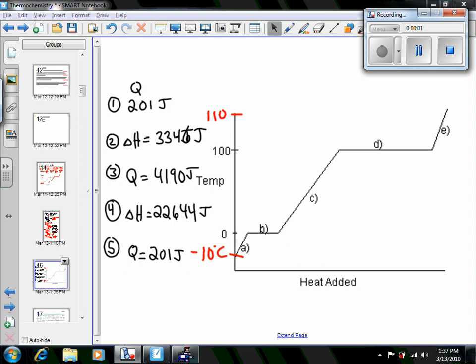Okay, so to bring all that energy together and to get the total energy, we found that it was 201 joules for the heating of ice from negative 10 up to 0 degrees. So we had 201 joules here.